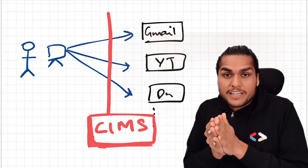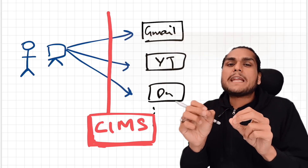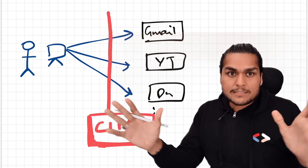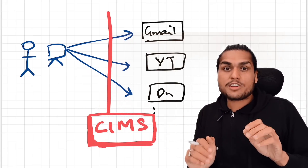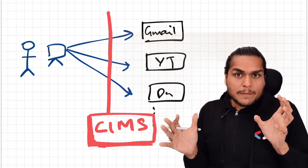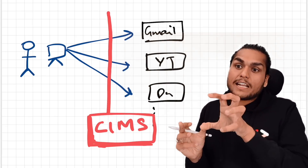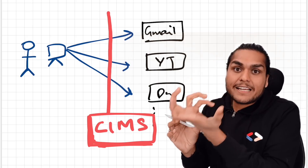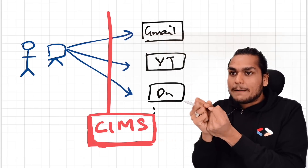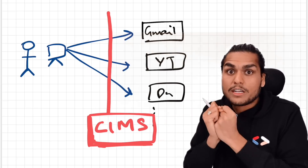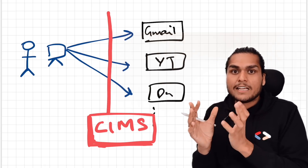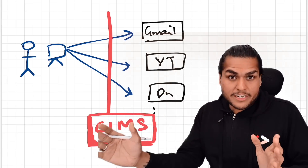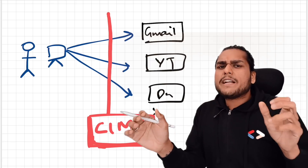This is a very hot interview question in system design rounds at big IT companies. In the system design round, a key question is: when you design a system, can you identify what the SPOFs are? What are the single points of failure, and how can you ensure these systems achieve near-100% availability? What algorithms and mechanisms will you use to keep these systems available?